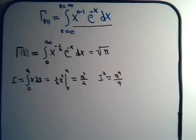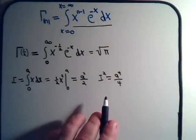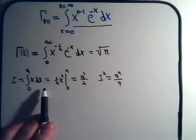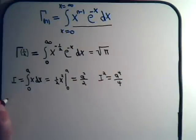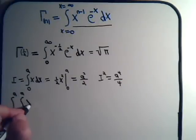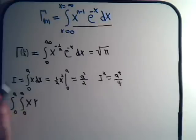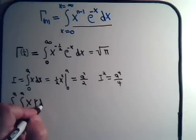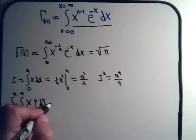Now, to get the integral squared, the way we can go about it is doing this integral twice — we write it as a double integral. So we would have the integral from zero to a, the integral from zero to a of x y dy dx.